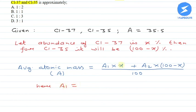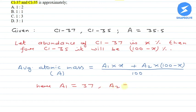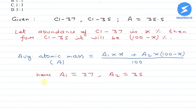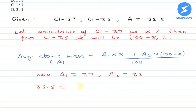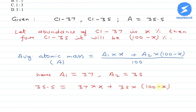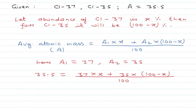a1 की value 37 है (for Cl-37) और a2 की value 35 है। अब हम values put करते हैं: average atomic mass की जगह 35.5 रखेंगे। So: 35.5 = (37 × x + 35 × (100 − x)) / 100. Cross multiply करने पर: 3550 = 37x + 3500 − 35x.